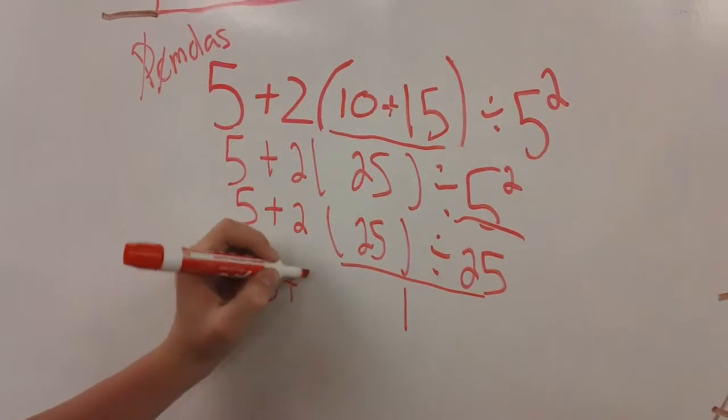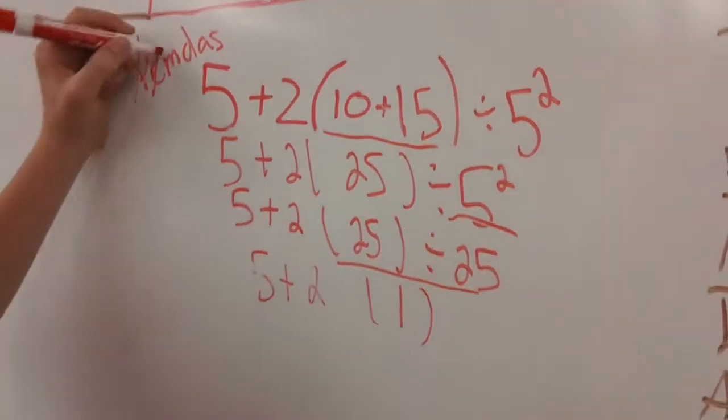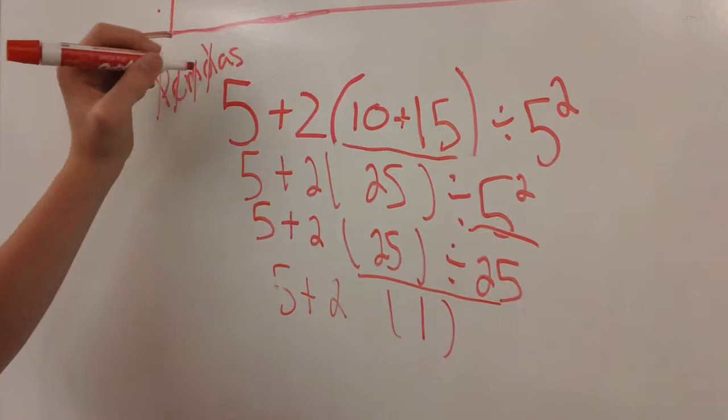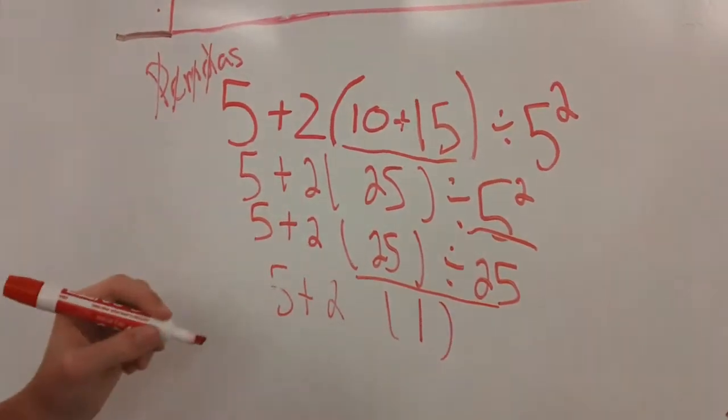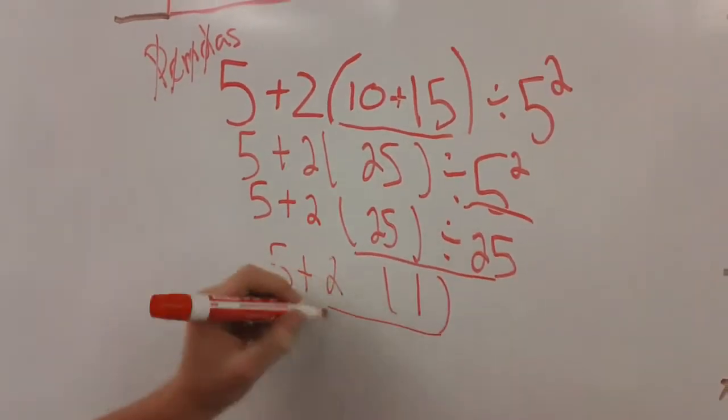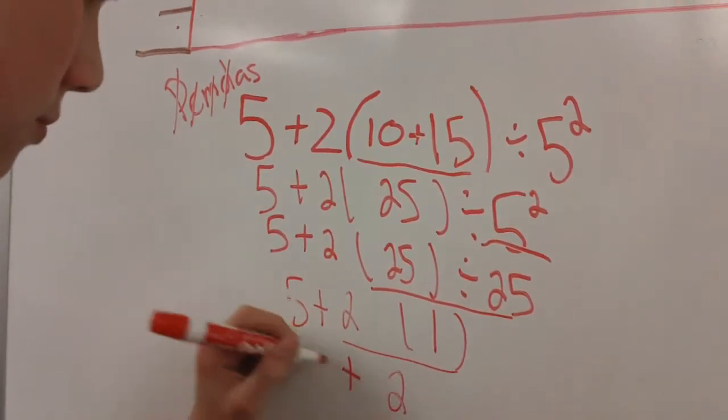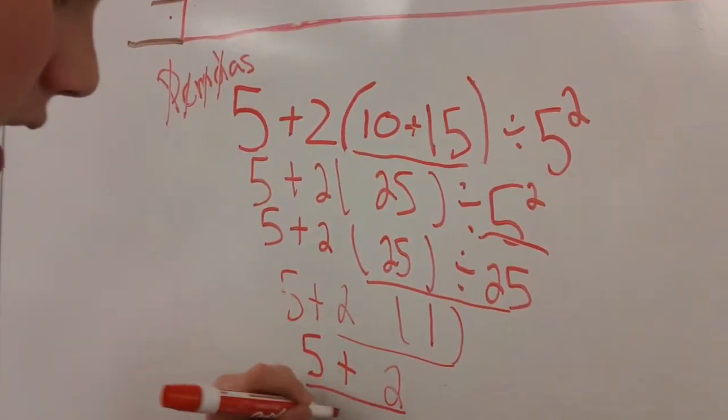5 plus 2 times 1. There is no dividing. Add, subtract, from left to right. And the answer would be 7.